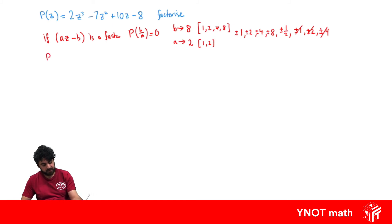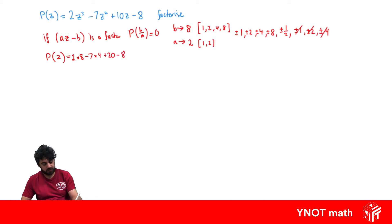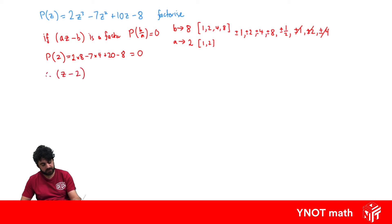Substituting z equals 2: we get 2 times 8, minus 7 times 4, plus 20, minus 8, which equals 0. So z minus 2 is a factor.